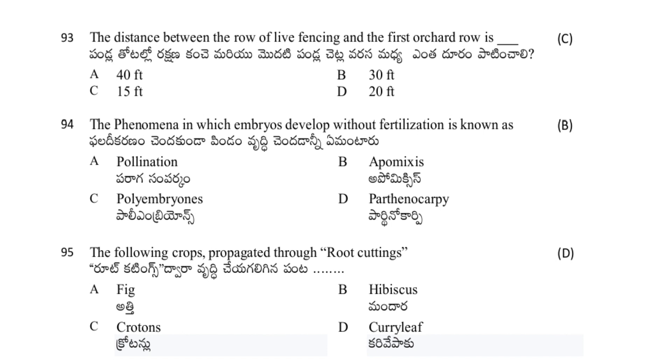The distance between the row of live fencing and the first orchard row is: 40 feet, 30 feet, 15 feet, or 20 feet. The answer is C — 15 feet.